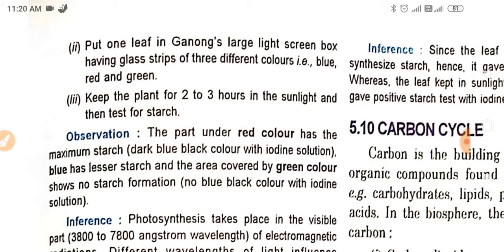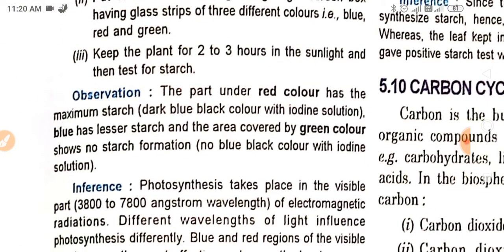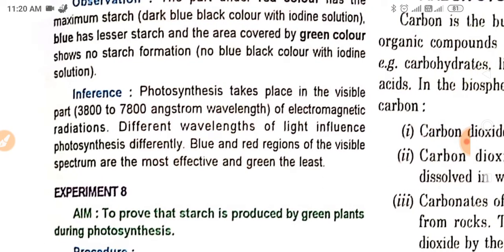Keep the plant for two to three hours in the sunlight and then test for starch. The part under red color has the maximum starch, dark blue-black color with iodine solution. Blue has lesser starch, and the area covered by green color shows no starch formation—no blue-black color with iodine solution. The inference is that photosynthesis takes place in the visible part, 3800 to 7800 angstrom wavelength of electromagnetic radiations. Different wavelengths of light influence photosynthesis differently. Blue and red regions of the visible spectrum are the most effective, and green the least. So in two regions, blue and red, the most photosynthesis occurs, whereas in green, the least.